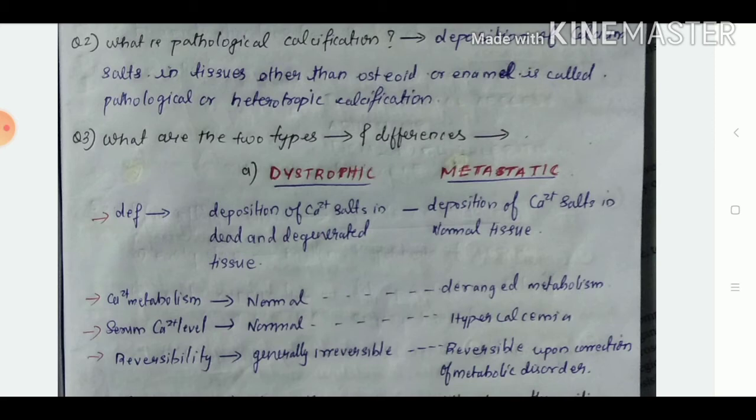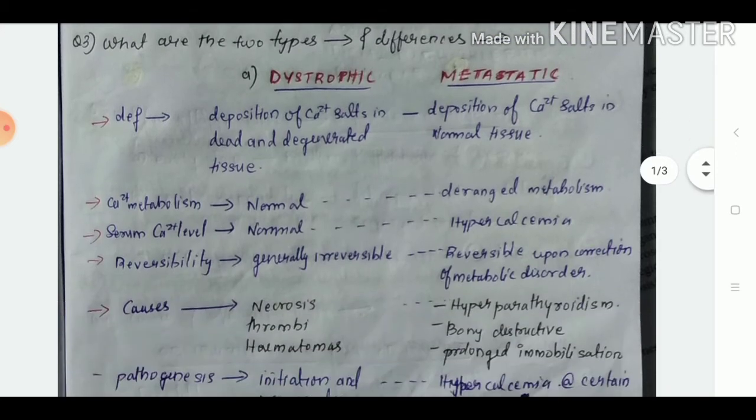What are the two types of pathological calcification? They are dystrophic calcification and metastatic calcification. The difference may sometimes be asked. Dystrophic calcification is deposition of calcium salts in dead and degenerated tissues.